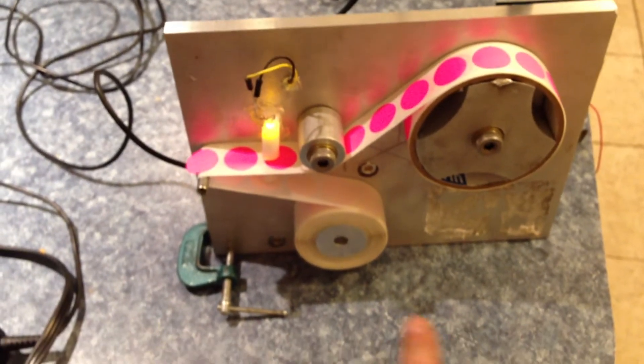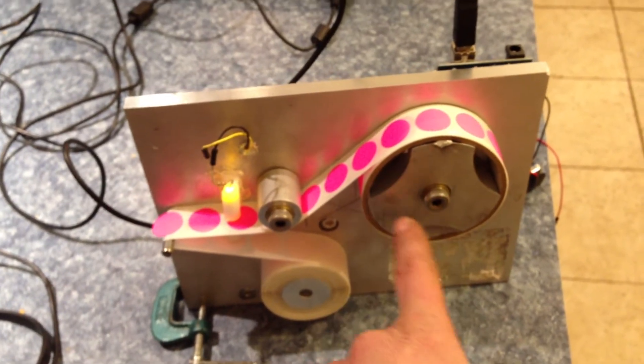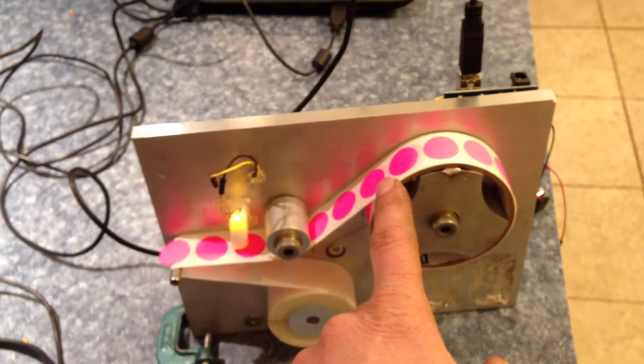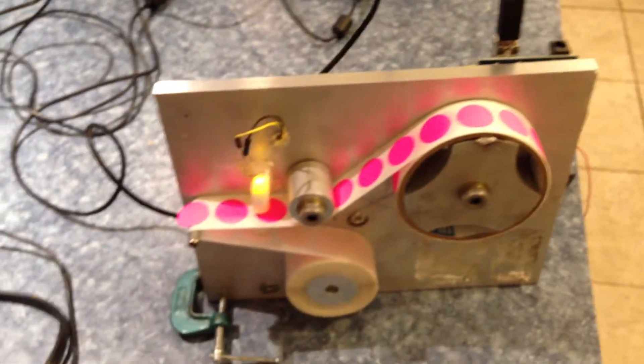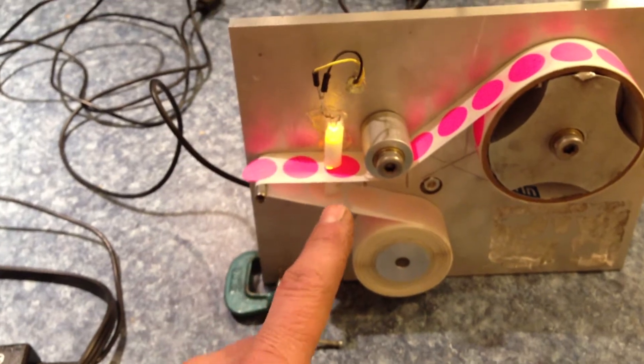The setup here is just a gear motor with a wheel. This wheel holds the three inch roll of three quarter inch labels. There's a thousand on a roll. Just an idler pulley, and like I said, there's the LED and photoresistor underneath. This is just a prototype.